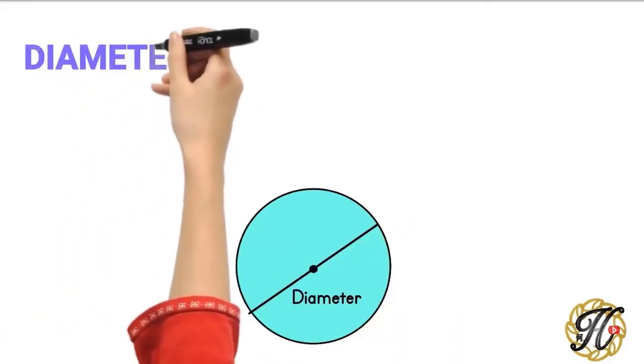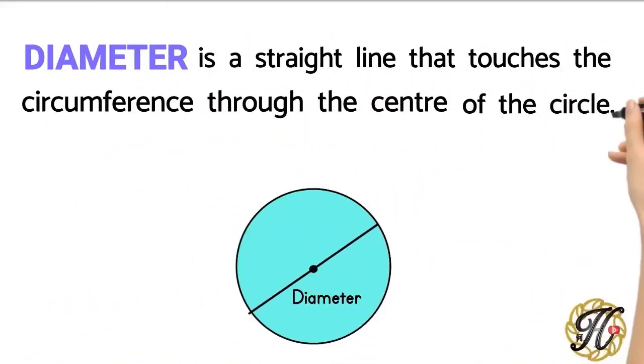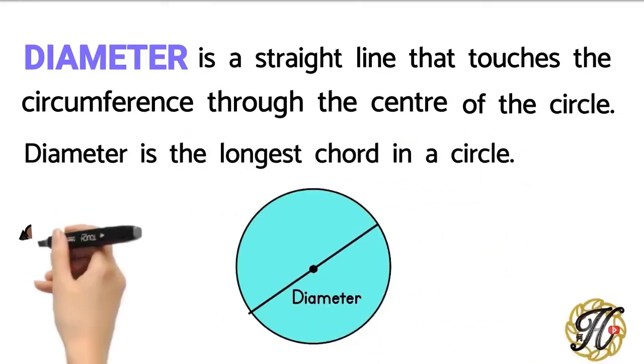Diameter is a straight line that touches the circumference through the center of the circle. Diameter is the longest chord in a circle.